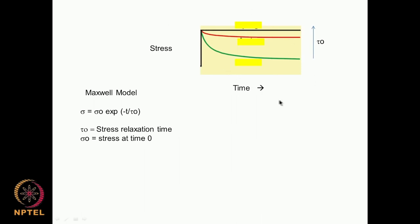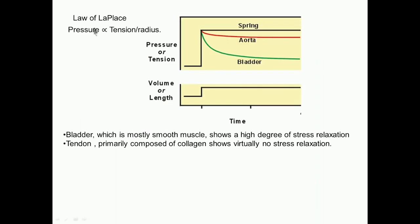There is a model called the Maxwell model. The stress versus time will keep coming down for different values of something called tau-0, which is called the stress relaxation time. Sigma, the stress, equals sigma-0 times exponent of minus t by tau-0, where sigma-0 is the stress at time equal to zero and tau-0 is the stress relaxation time. The stress falls down exponentially as a function of time, and the rate of falling depends on the stress relaxation time.